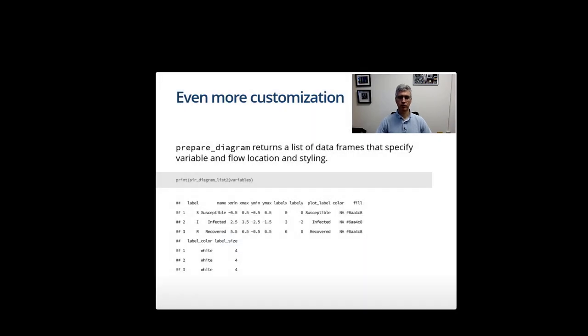You can do a good bit of customization with that, but it might still not quite get you where you need to be. For that we have this two-step process. When you call prepare_diagram it returns a list with two data frames, one for variables and one for flows.